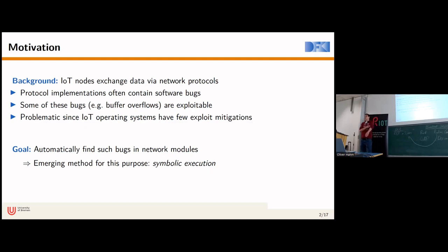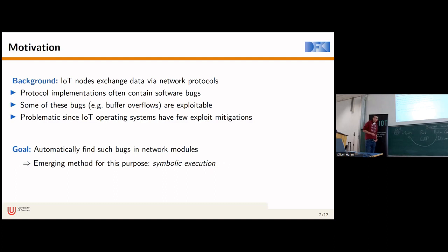Coming back to the Rust discussion we had during this day, some of these bugs, for example buffer overflows, are exploitable. Most network protocol implementations in RIOT and other IoT operating systems are written in C, and therefore potentially subject to buffer overflows. This is especially problematic because mitigations available on conventional systems like Linux — such as address space layout randomization or stack smashing protections — are not commonly available on RIOT and similar operating systems.